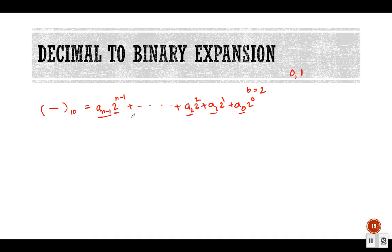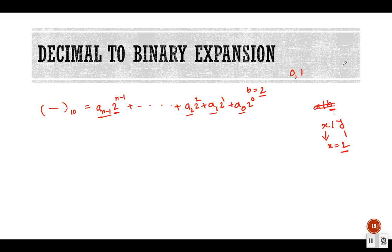The algorithm works like this: I'm going to keep dividing the decimal number by 2. In the divide algorithm, the divisor b is the base, which is 2. When I divide by 2, the remainder is always less than 2, so the remainder will always be either 0 or 1. I'm going to use those remainders as my binary expansion. Let's see an example.